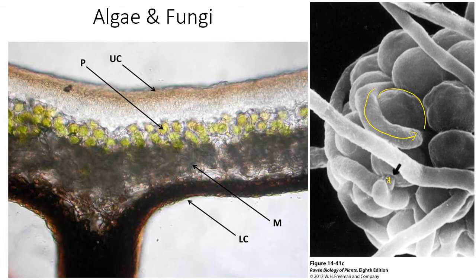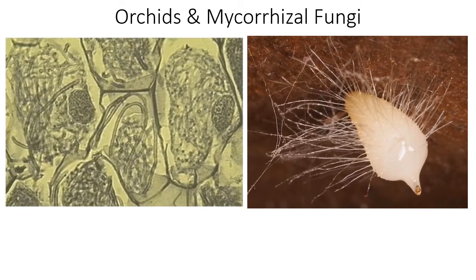The algae only really get to eat when the lichen thallus starts to dry out and the fungus is distracted repairing it. So it's sort of like the fungus is farming the algae. The lichen is a mutualism in that the algae can survive in a broader variety of areas, but when it eats and its reproduction are all controlled by the fungus — similar to asking whether corn has a mutualism with people because we plant it, care for it, and ensure its reproduction.